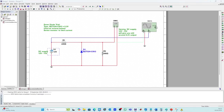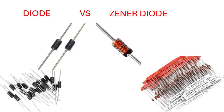So, the normal diode is your one-way gate, while the zener diode is your safety valve that keeps voltage steady. If you enjoyed this breakdown, don't forget to like, share, and subscribe for more clear explanations in electronics.